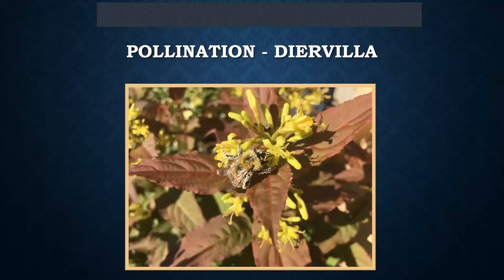So this is a bumblebee that's just dusted in pollen — coated in pollen — and that's on a type of honeysuckle shrub called the diervilla. What's going on here, looking at the biology of it: when we say pollination, specifically what has to happen is this little powder — the pollen — needs to actually be transferred over to a different flower to pollinate and lead to fertilization and production of the seed.